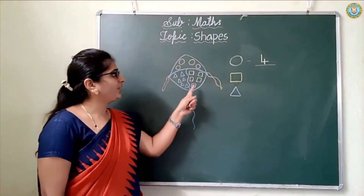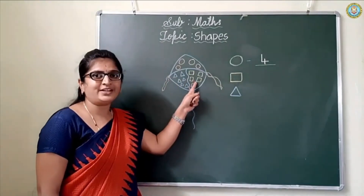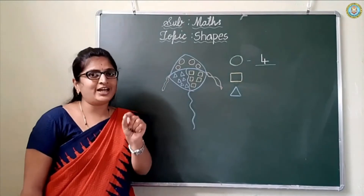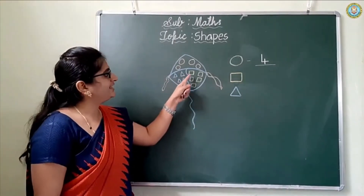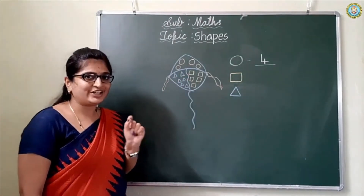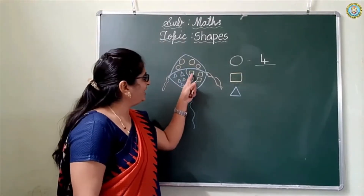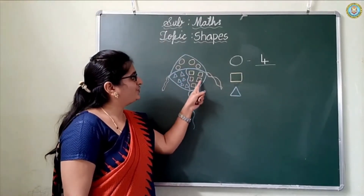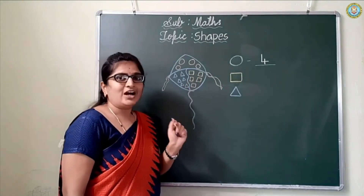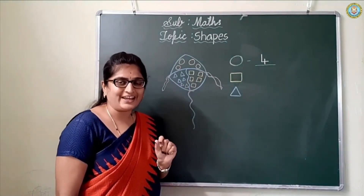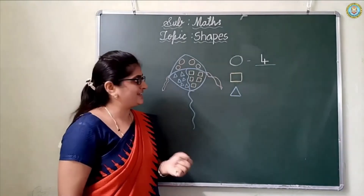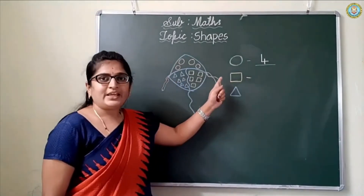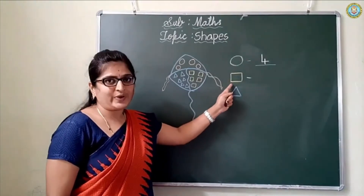Okay, see here. Which shape is it? Square. Now you count the squares. See here, how many squares are there? Count now: one, two, three, four, five. How many squares are there? There are five squares.